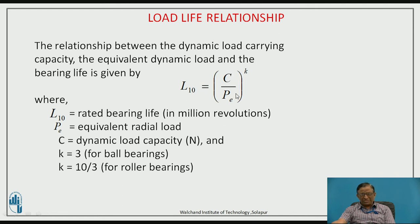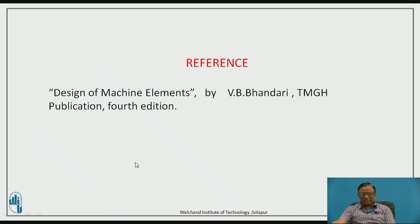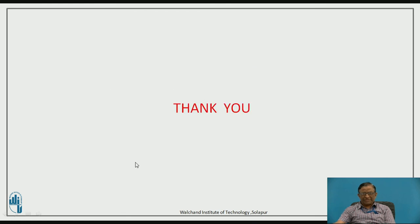To calculate the dynamic load capacity C, we use the equation: L10 = (C/P)^k, where k = 3 for ball bearings and k = 10/3 for roller bearings. Rearranging, C = P × L10^(1/k). Using these design characteristics — static load capacity, rated life, and equivalent load — we can calculate the required dynamic load capacity of the bearing. Thank you.